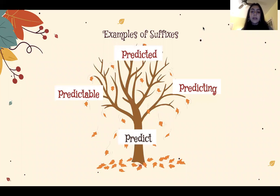Let's look at how these suffixes can change the meaning of a word. At the base of this tree we have the word predict. Able is added to the end of the word and means can be done. Adding this to predict creates predictable, which means something that can be predicted. For example, the basketball game winner was very predictable.